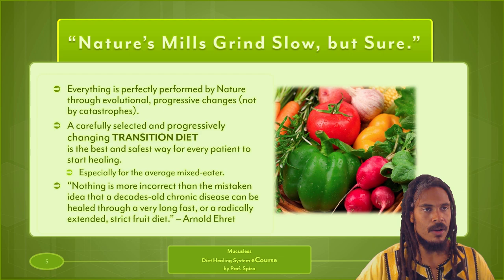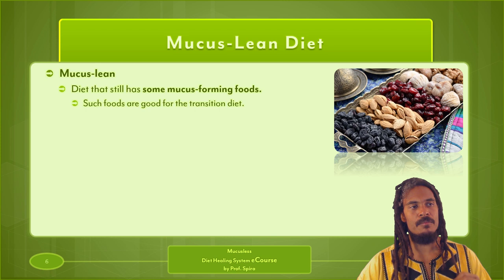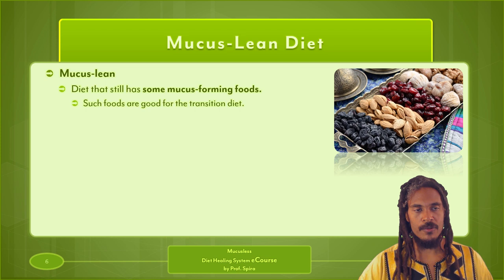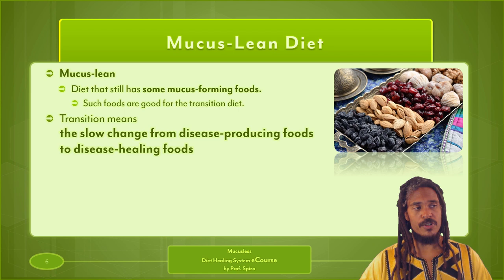Mucus lean — let's define this term. A mucus lean diet is one that still has some mucus-forming foods in it, and such foods are good for the transition diet. Think of a meal with nuts and dried fruit like raisins — that would be considered a mucus lean meal. Transition means the slow change from disease-producing foods to disease-healing foods.